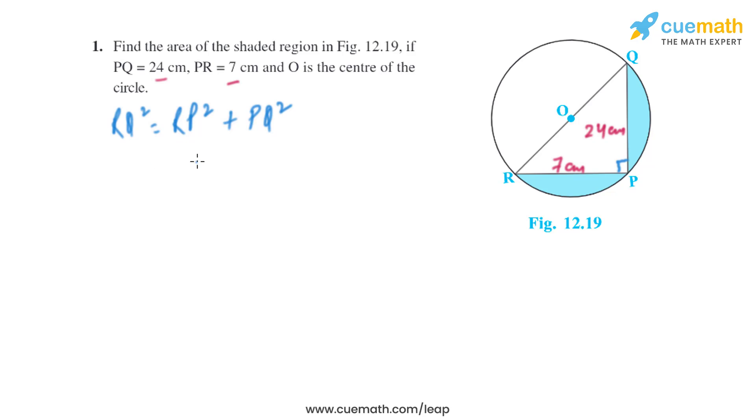We will get RQ squared equals RP squared plus PQ squared. We know the length of RP is 7 centimeters, so it will be 7 squared. Plus, we know the length of PQ is 24, so it will be 24 squared.